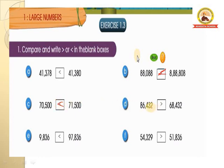Next D: 86,432 and 68,432. By comparing the first digit only we understand which is greater. 8 is greater than 6, so 86,432 is greater than 68,432. The fish opens its mouth towards the bigger number.